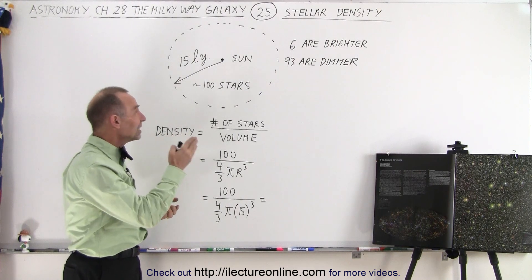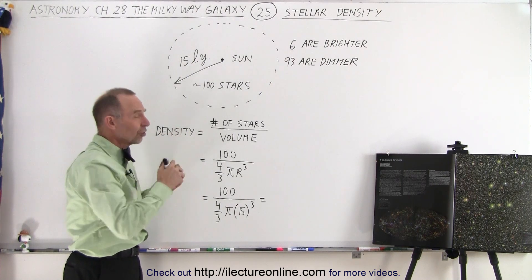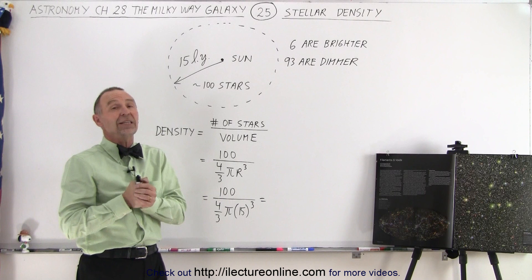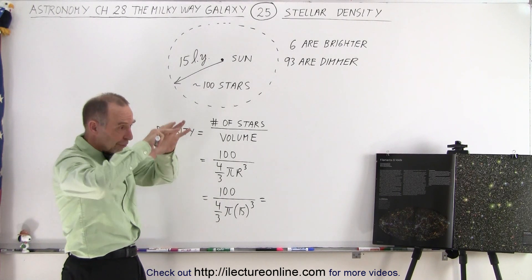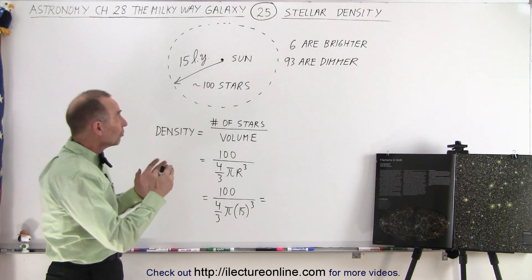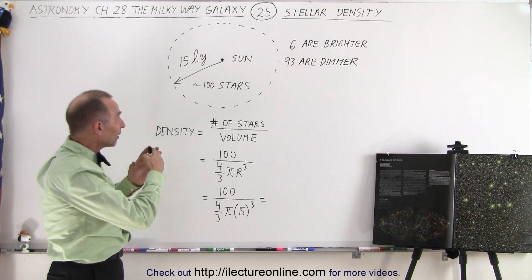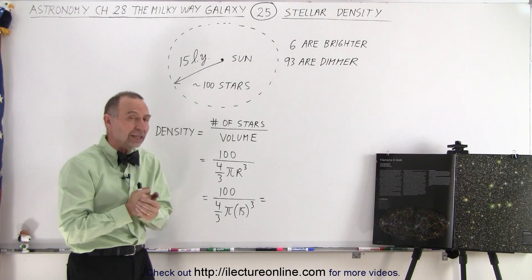They measured the distance of the 100 nearest stars within a radius of about 15 light years. So sure enough, the volume of space around us that contains 100 stars is about the volume that has a radius of 15 light years.